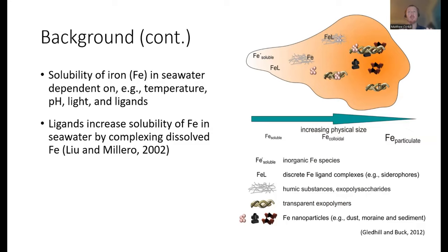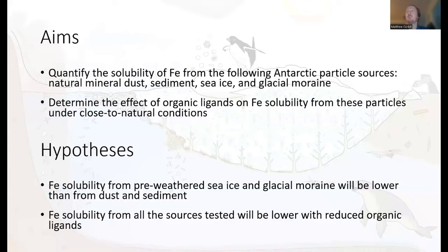The aims of the study are: first, to quantify the solubility of iron from particle sources — dust, sediment, sea ice, and glacial moraine; and second, to determine the effect of organic ligands in seawater on iron solubility from these particles. Hypotheses are that pre-weathered samples — sea ice and glacial moraine — will have lower iron solubility than dust, and that iron solubility from all sources will be lower with reduced organic ligands. Particles used: dust and glacial moraine from Casey Station; sediment from the shelf break near Totten Glacier; sea ice particles from fast ice near Davis Station.